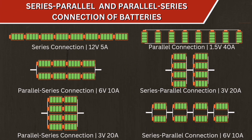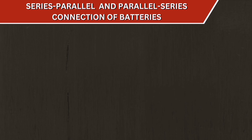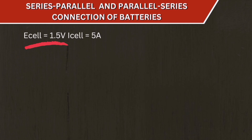In this video, we will discuss arrangements of eight cells in six different ways. In these arrangements, we will notice the difference in output voltage at the terminal end of the sources and also the difference in current. Each cell has a voltage (E_cell) of 1.5 volts and a current capacity (I_cell) of 5 amperes.